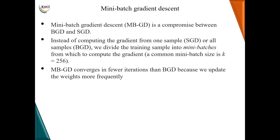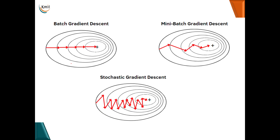Mini-batch gradient descent is a compromise between batch and stochastic gradient descent — it takes batches of training data for forward pass, backward pass, and weight update. The commonly used batch size is 256. When comparing batch and stochastic gradient descent, we prefer stochastic gradient descent when the dataset is very large.